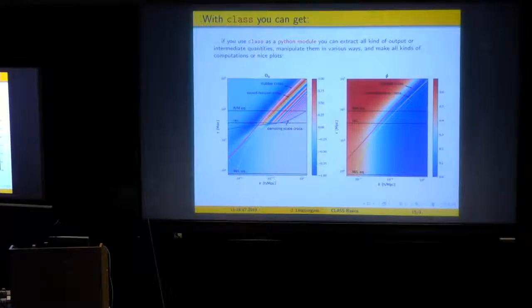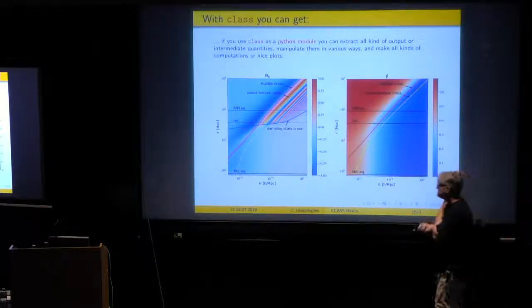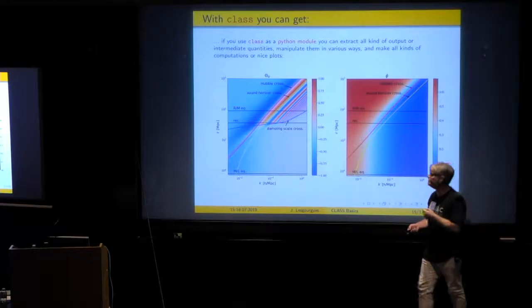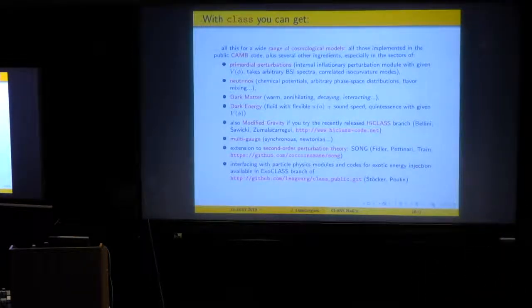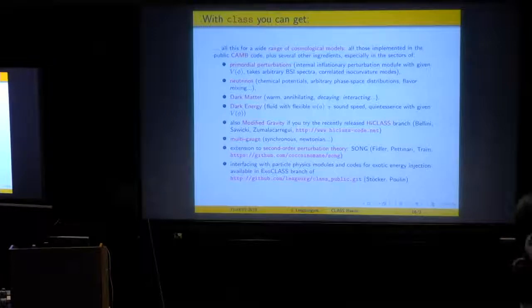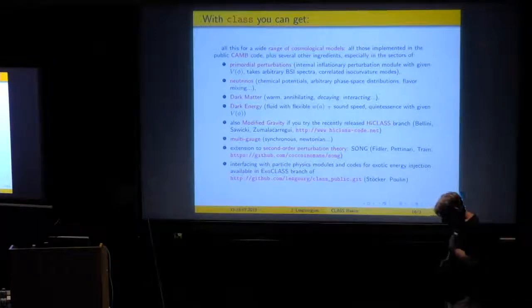You can see very well that quantities are frozen on super-Hubble scale, and you see the acoustic oscillation on sub-Hubble scales during radiation domination, which tend to be damped during the beginning of matter domination. Here you see really everything. And the same for phi. You can, with these plots, you can really explain what is the early integrated Sachs-Wolfe effect, which comes from here, or the late one, which comes from here. Okay, so this is to advertise the advantage of using this Python script. Okay, so you can do all this for a wide range of cosmological models.